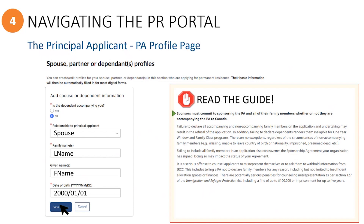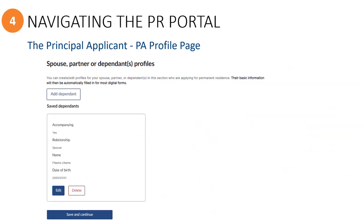Be sure to click on the Save and Continue button once you have entered in all of the information for this dependent before moving on to add another dependent. Once saved, you will see the details for each of the added dependents. You can go back to edit this information at a later date if necessary, but only as long as the application has not yet been submitted.